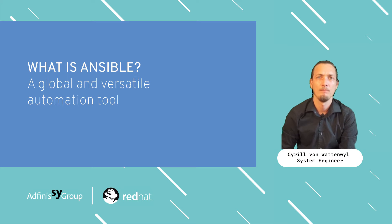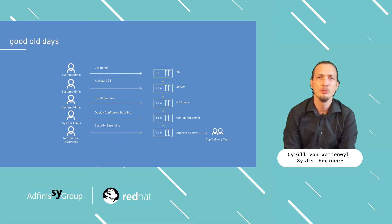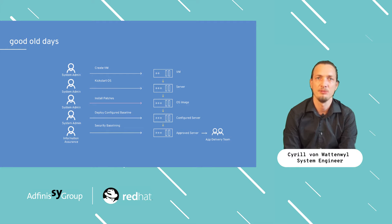What is Ansible? Originally developed in 2012, Ansible is one of the best-known automation tools of today. In the good old days, provisioning a server was hard work. First, a system admin had to create a VM, then manually install an operating system on it, install patches for it, and configure all of its software. After that, security had to do their thing before it got handed over to the app team. This took a long time and had much room for failures.